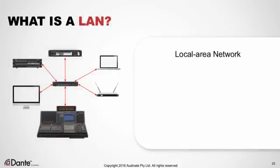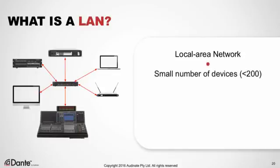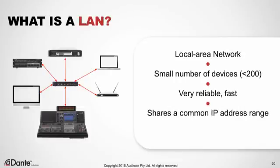Let's define some more terms. A LAN — L-A-N — stands for Local Area Network. This kind of network is extremely common and is typically what we have in our homes with a Wi-Fi access point and a few connected devices. A LAN is a computer network that contains a relatively small number of devices, typically less than a couple hundred. Devices on an Ethernet LAN share a common IP address range, which allows all devices to freely communicate with one another to send data and share resources. On a wired Ethernet LAN, speeds are very high and reliability is excellent. Typical Dante installations are always on LANs.